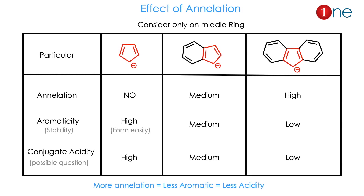Let us see the annulation effect in action — look only at the middle ring here. The first compound is just the cyclopentadienyl anion. Then it is attached with one benzene ring, then fused with two benzene rings. The first one has no annulation. The second one is sharing with one benzene ring, so the effect is medium. The third one has a benzene ring on either side, so the annulation effect is high because there is more sharing. Since the third has more sharing, the annulation effect is high.